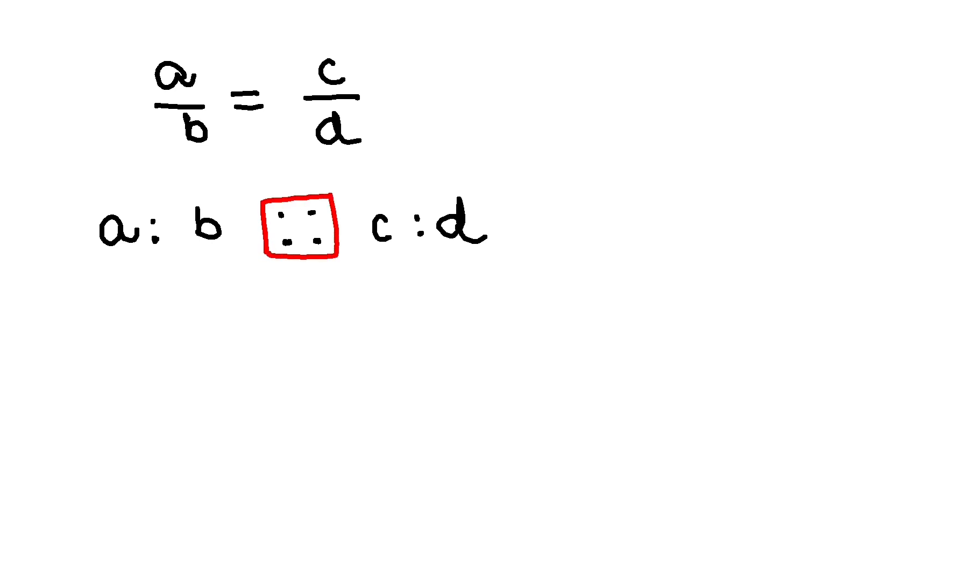Now there are four terms A, B, C, D. This A and D, because they are the extremes, are called the extreme terms. So A and D are called the extreme terms.